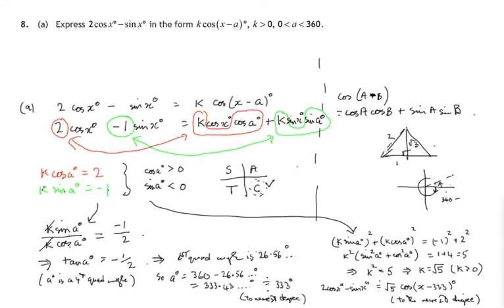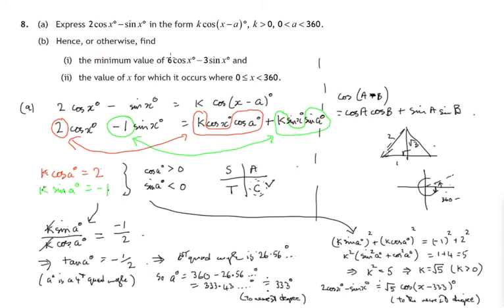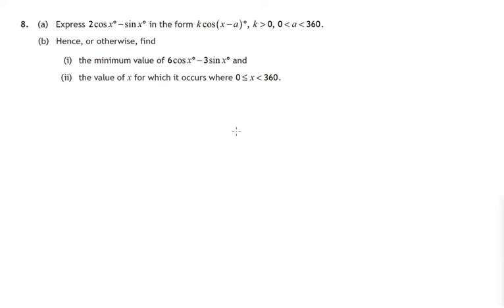So let's now move on to part B of the question and there it is, it says hence or otherwise, so we'll be using what we've found in part A presumably, the minimum value of 6 cos X minus 3 sin X and the value of X that gives that minimum value of X between 0 and 360. So let's make room for this new question and remember what we've found from the first one. We know that 2 cos X minus sin X can be written as root 5 times cosine of X minus 333 degrees.